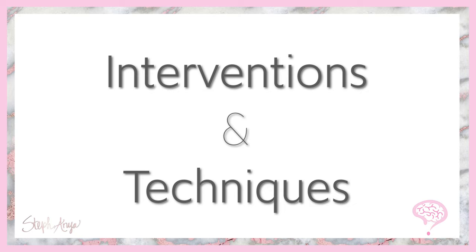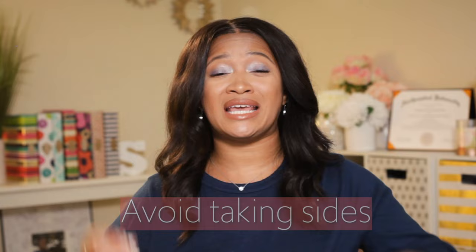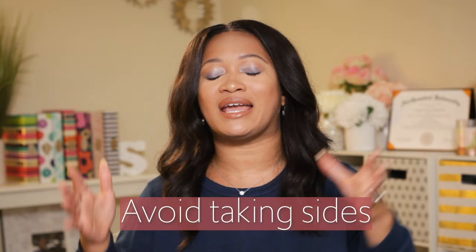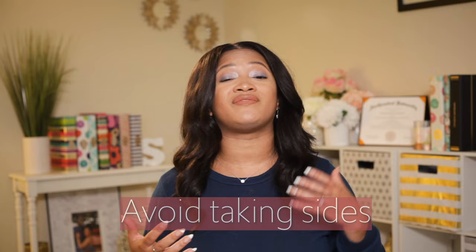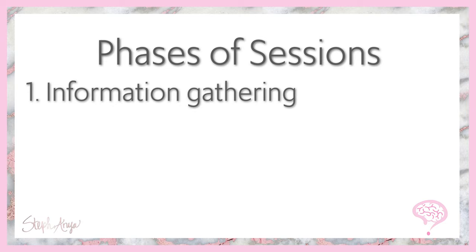Now let's talk interventions and techniques. The most important thing for the therapist using the Gottman method is to avoid taking sides. You want to practice accurate empathy and understand what's happening on both sides, serving more as a coach or consultant helping them communicate more effectively. The first few sessions are information gathering — trying to understand what's going on in the relationship. Later, you'll probably do some individual sessions with both partners.